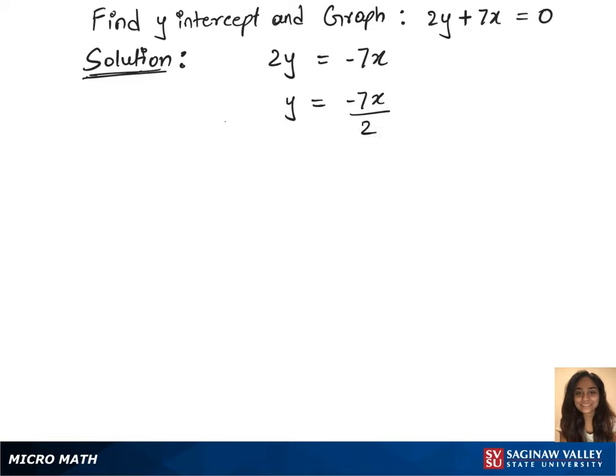Let's substitute x as 0 to get the y-intercept. X equals 0, y equals minus 7 times 0 over 2. This gives us 0, which is the y-intercept. So 0 and 0 is the point we got.